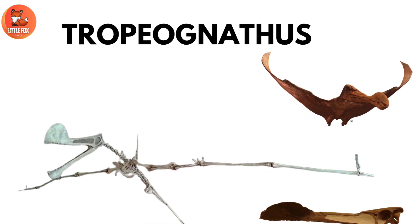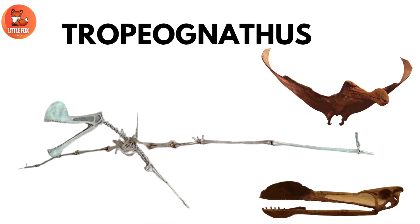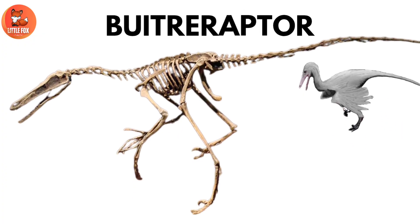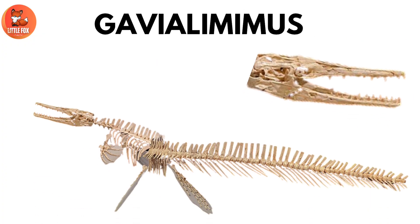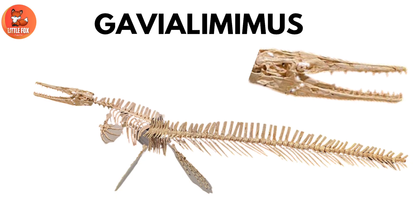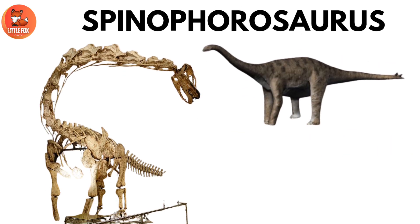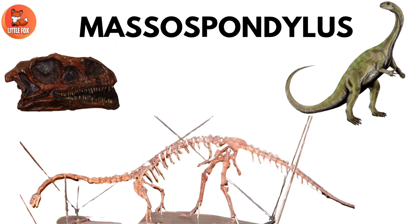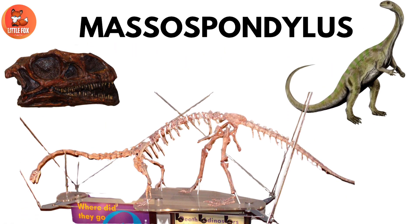Number 6: Tropionathus. Number 7: Patriopter. Number 8: Gavialimimus. Number 9: Spinaforosaurus. Number 10: Massospondylus.